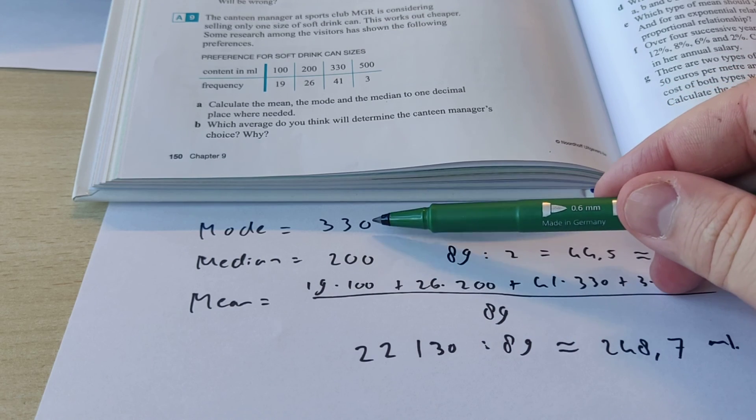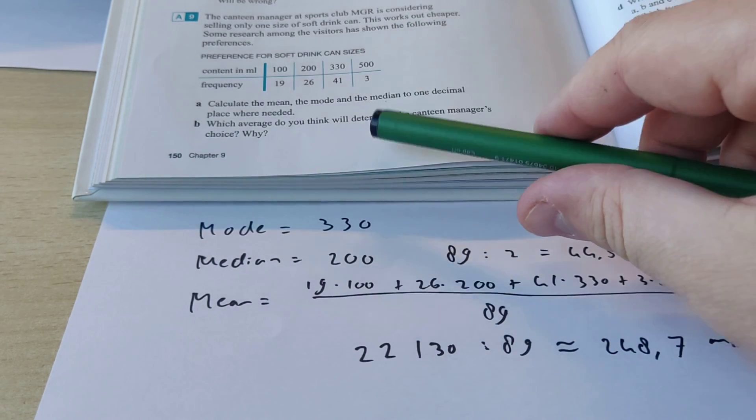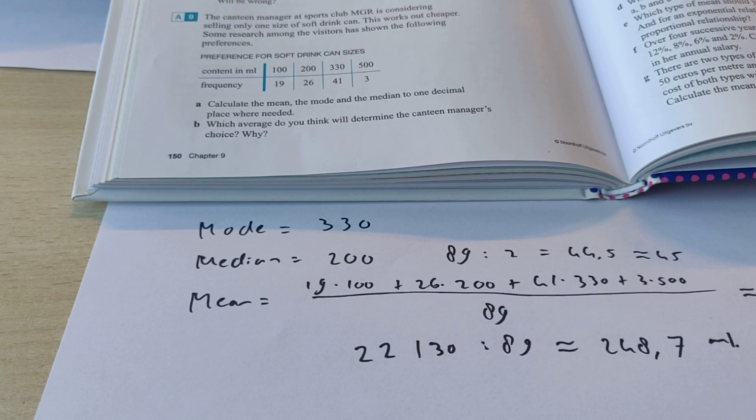But I would think someone would go with the mode. Because that's what most people want, right? The majority wants this can. So, he'll probably choose that. So, which average do you think will determine the canteen manager's choice? Well, I'd say it's the mode. Okay. Thank you for watching.